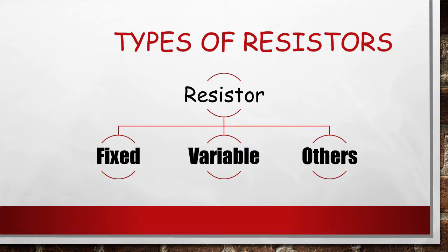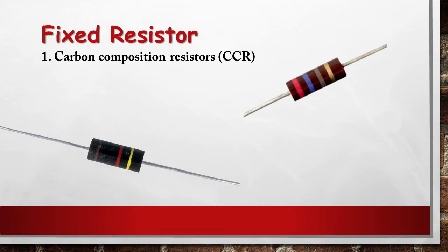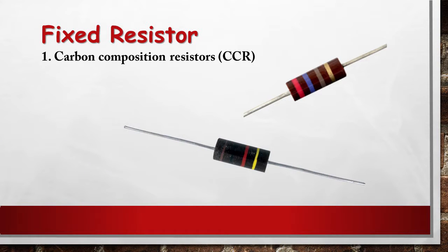We can broadly classify resistors into three types. Carbon composition resistors, CCR, consist of a solid cylindrical resistive element with embedded wire leads or metal end caps to which the lead wires are attached. The body of the resistor is protected with paint or plastic. Early 20th century carbon composition resistors had uninsulated bodies. The lead wires were wrapped around the ends of the resistance element rod and soldered. The completed resistor was painted for color coding of its value.